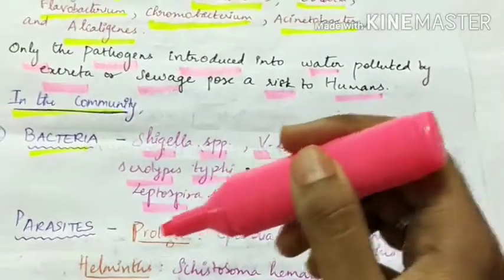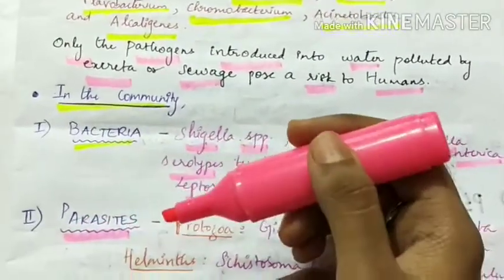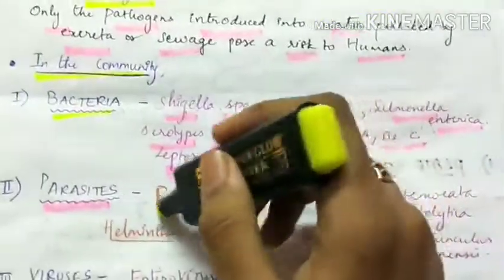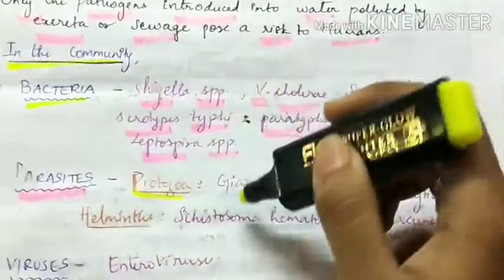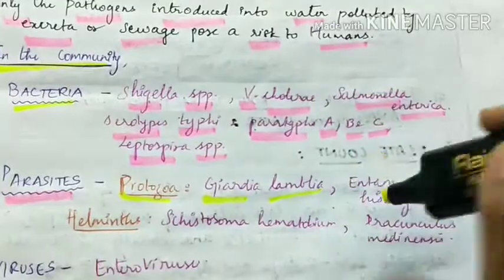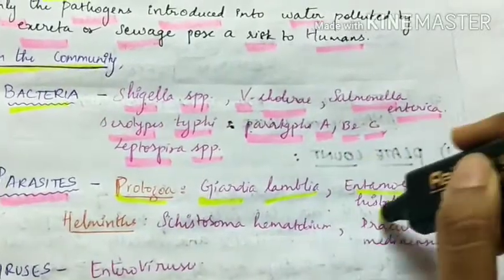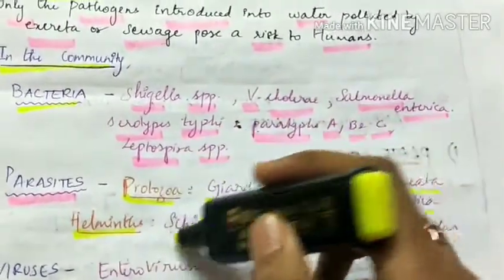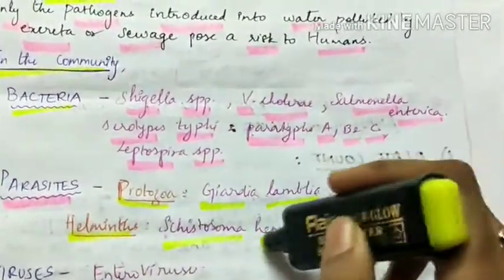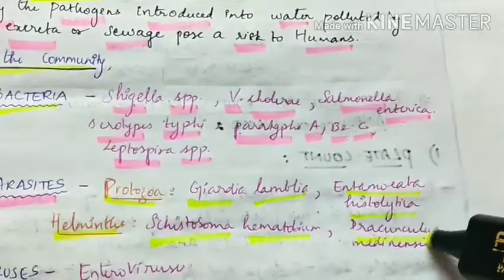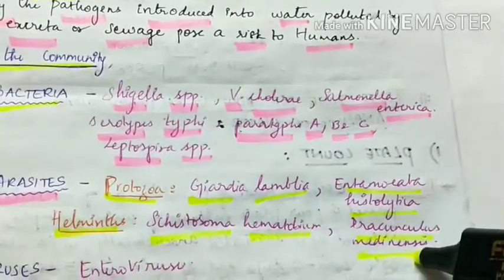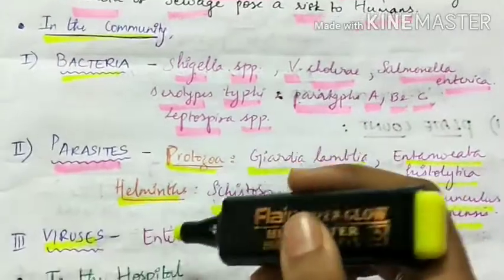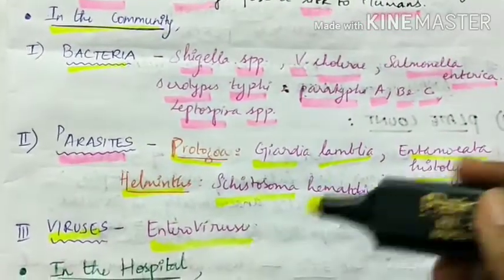Next are parasites. Protozoa include Giardia lamblia and Entamoeba histolytica, and the helminths Schistosoma haematobium and Dracunculus medinensis. Lastly, viruses like Enteroviruses.